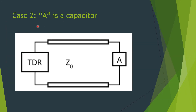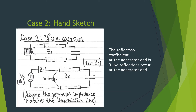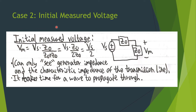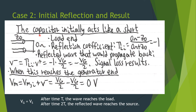Now looking at case 2, we're going to analyze the same circuit but replace A with a capacitor. Matching occurs at the generator end so the reflection coefficient there is 0, and no reflections will occur at the generator. The initial measured voltage is again Vs over 2 by voltage division. We know that the capacitor will initially act like a short when the waveform reaches it at the load end, so the reflection coefficient is 0 minus Z0 over 0 plus Z0, or negative 1. The reflected wave propagating back is negative 1 times Vs over 2, resulting in signal loss, so the measured voltage becomes Vs over 2 minus Vs over 2, or 0 volts.